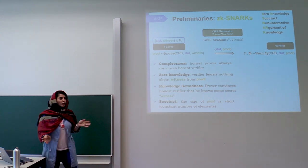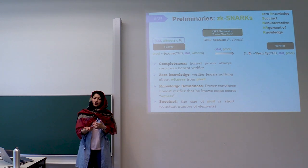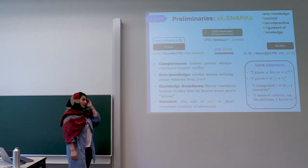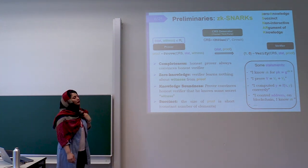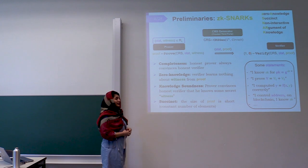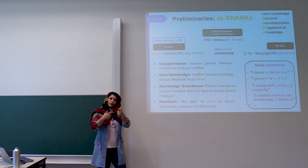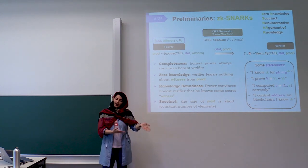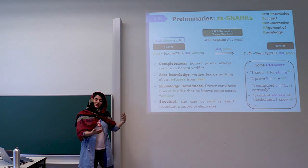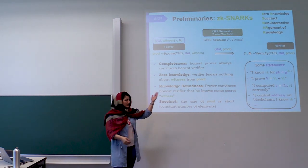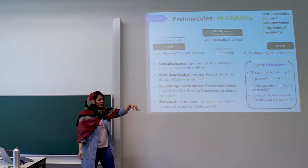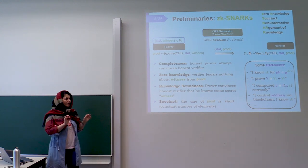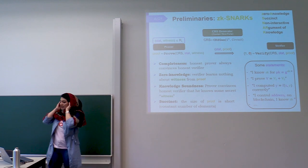Knowledge soundness means there is an extractor which can extract the witness from the prover. The last property is succinctness — the proof should be short, as in Bitcoin or Zcash where proofs are sent into the ledger. For example, a prover wants to give a proof that she knows a secret key for a public key such that the public key equals g to the power of the secret key. In the second example, the prover wants to prove she knows values v1 and v2 for a public value v such that this equation holds — and this is how Zcash users check coin creation, receiving coins, and everything.